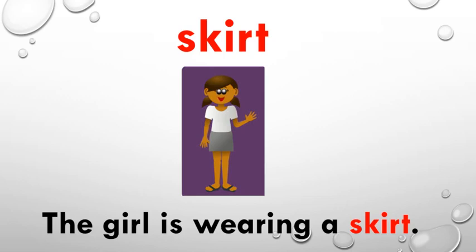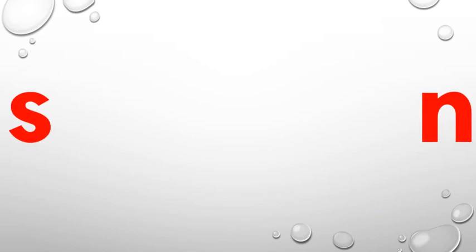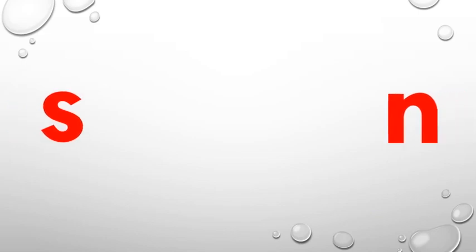Let us learn another S blend. Which two letters can you see here? S says 's' and N says 'n'. And together they form the blend 'sn'. Children, please repeat after me. Sn, sn. Now we will learn two words, their meaning as well as how they can be used in sentences with 'sn' blend.